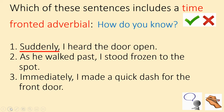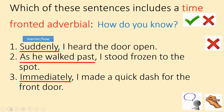Number one: 'Suddenly' — does that tell you when? No, it tells you how it happened — it happened suddenly. That's a manner-fronted adverbial. Number two: 'As he walked past' — that tells you when. It happened as he walked past. Number three: 'Immediately' — when did I make a quick dash? Immediately. That's when it happened. So you should have had cross, tick, tick.